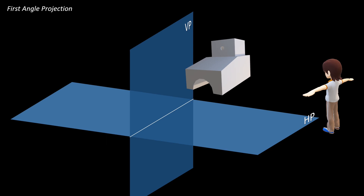In first angle projection, we have two reference planes: a vertical plane and a horizontal plane. This is the reference line, which is our XY line. In first angle projection, the observer and object are arranged such that the order is: observer, object, then plane of projection.